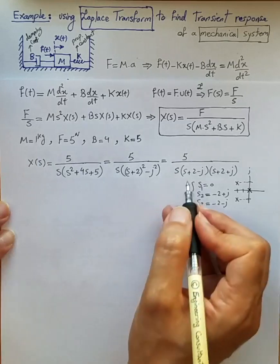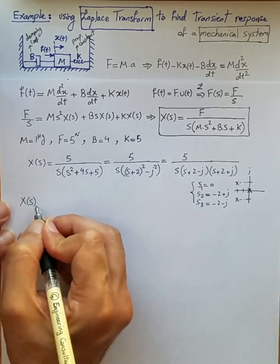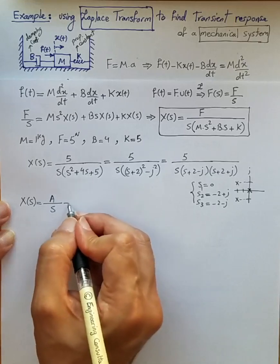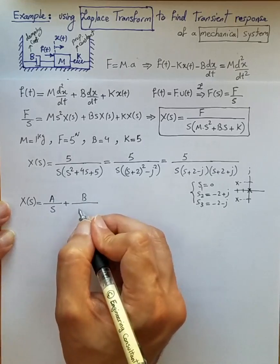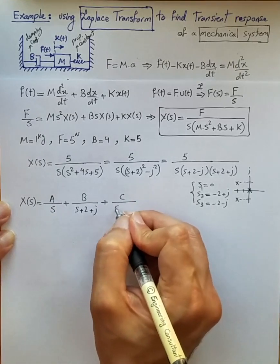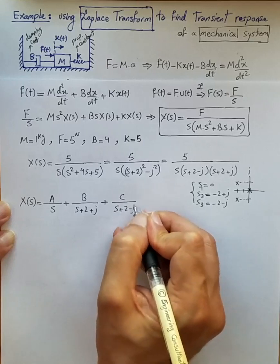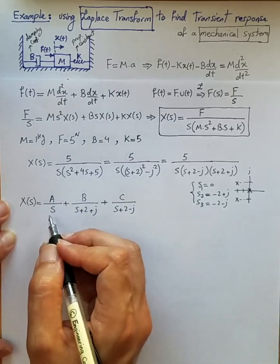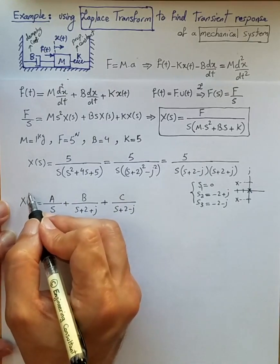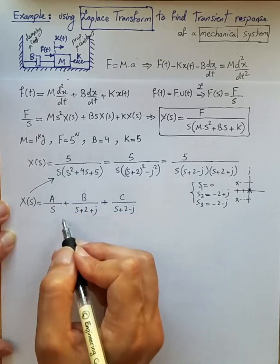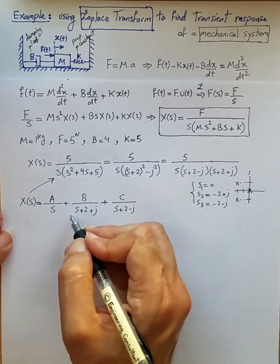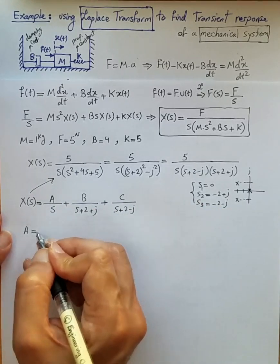Rather than using brute-force inverse Laplace transform, we use partial fraction expansion. We write X(s) as a coefficient A over s, plus coefficient B over (s+2+j), plus coefficient C over (s+2−j). To find A, we multiply both sides by s and then set s equal to zero, which cancels those terms out.